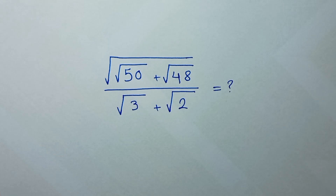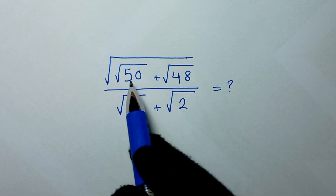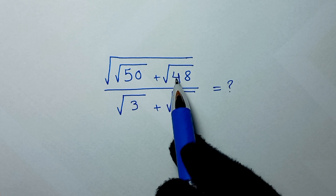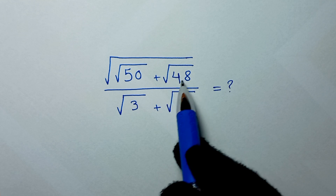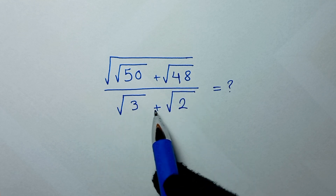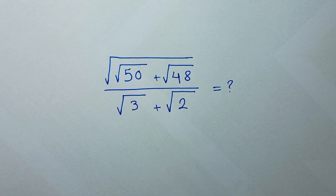Hello my friends, you're welcome to solve this math problem, which is square root of square root of 50 plus square root of 48, over square root of 3 plus square root of 2.